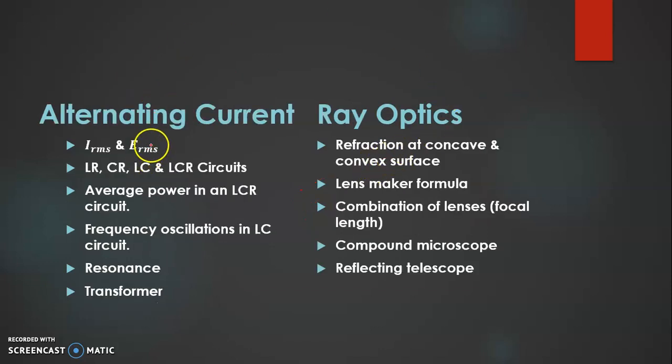Now coming to alternating current. From alternating current, do the expression for IRMS and ERMS. Now LR, CR, LC, LCR, all these circuits do them properly students, because all these circuits are important. Which year which circuit will come is very unpredictable, but if you ask me which circuit to give more emphasis, I would say for this year LCR is more important.